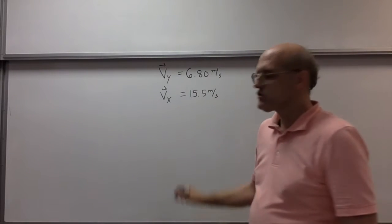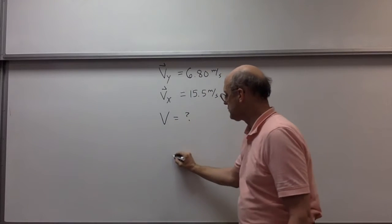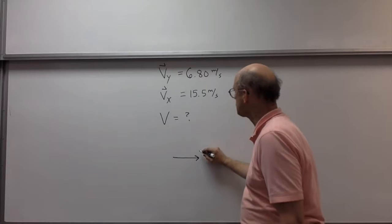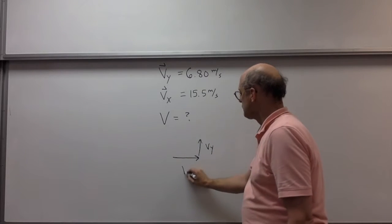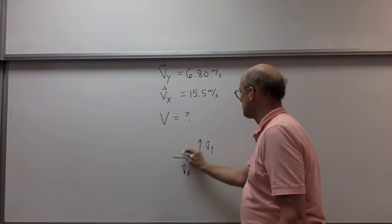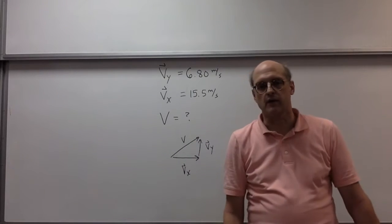They want us to find the magnitude of the velocity of the glider. Since these are at right angles, we can use the Pythagorean theorem.